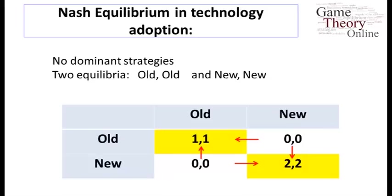One equilibrium is obviously better for both players than the other — we'll talk about that more later. Notice that nobody has an incentive to move away from old-old, so there's a strict benefit to sticking with that technology if you think the other person will. In order to move away from old-old, you'd need some sort of coordinated movement to overcome this in this particular game.